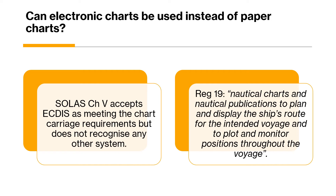Regulation 19 of SOLAS Chapter 5 also states that backup arrangements must meet the function requirements if those functions are partly or fully accepted electronically. Remember, it is only an approved ECDIS system that is allowed by SOLAS. Any other system which is not ECDIS will not be approved. ECDIS is therefore allowed for plotting and displaying positions as SOLAS describes, but it must be backed up by paper charts and publications as well.